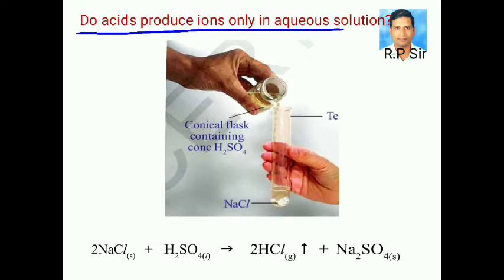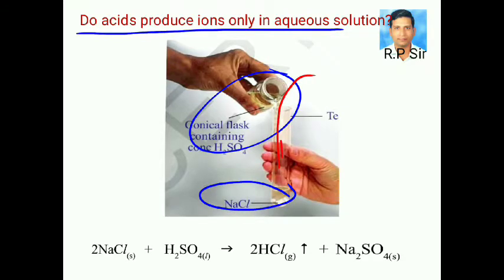Take about 1 gram of solid NaCl in a clean and dry test tube. Add some concentrated sulfuric acid to the test tube. You observe there is a gas coming out of the test tube.